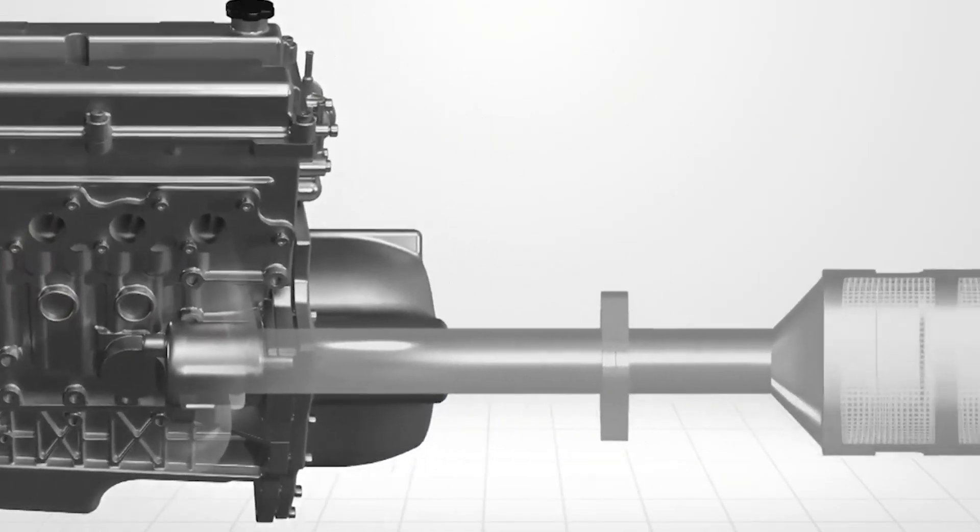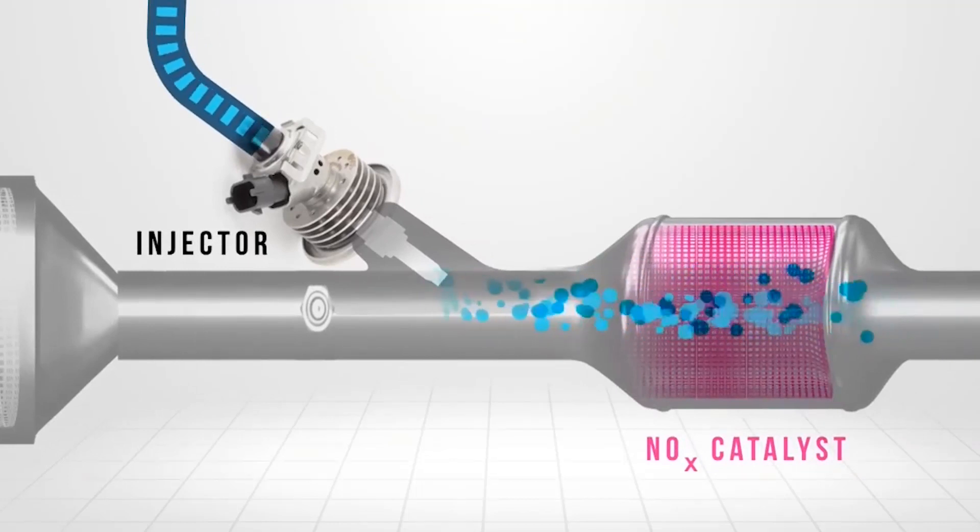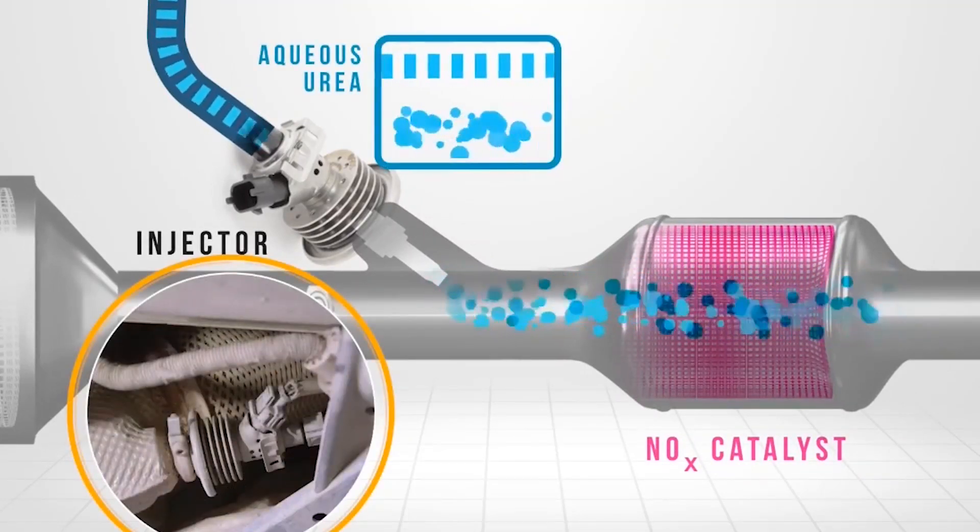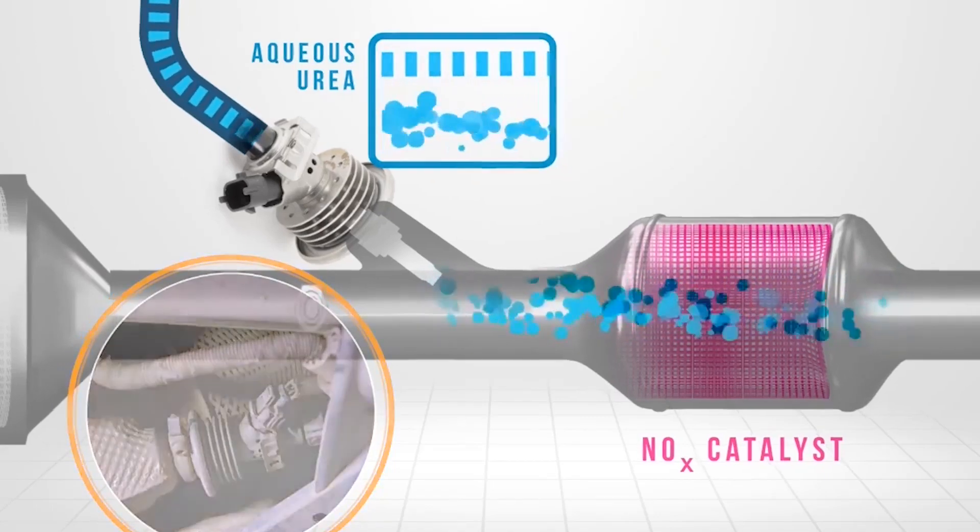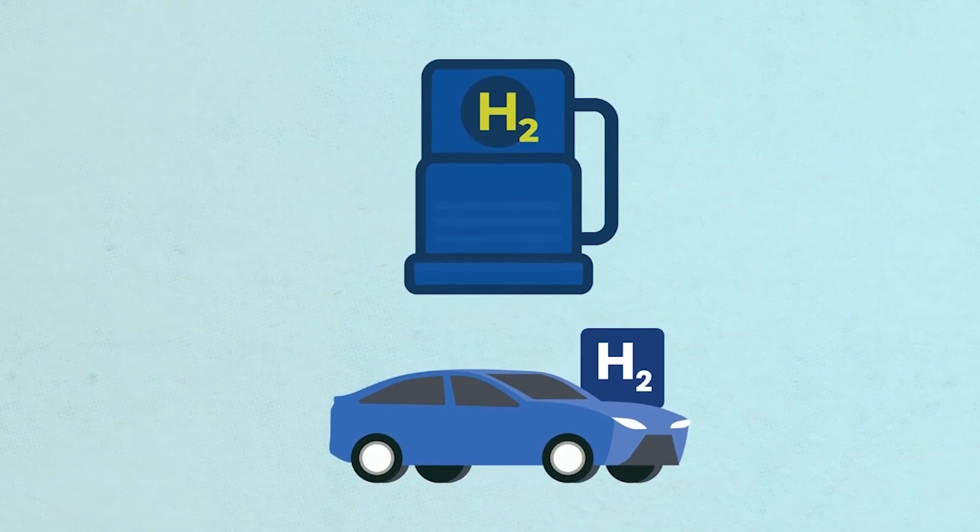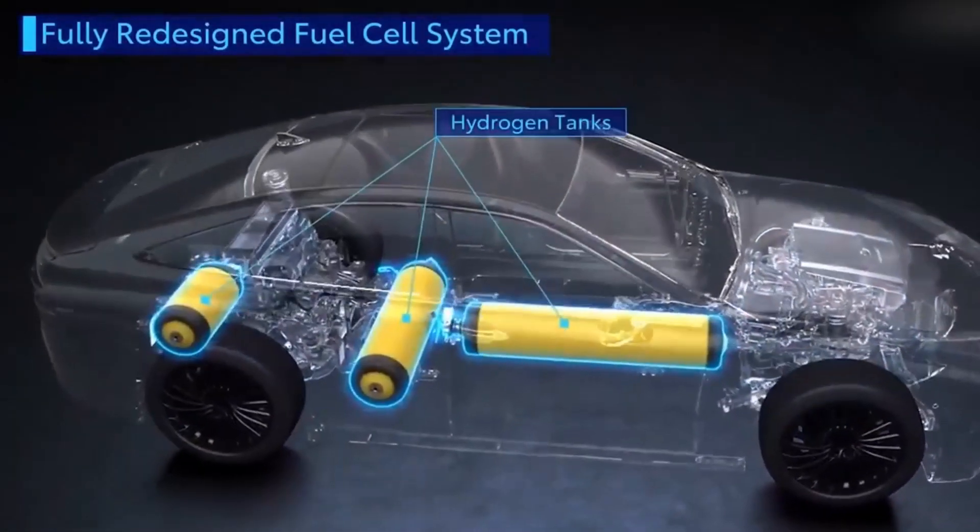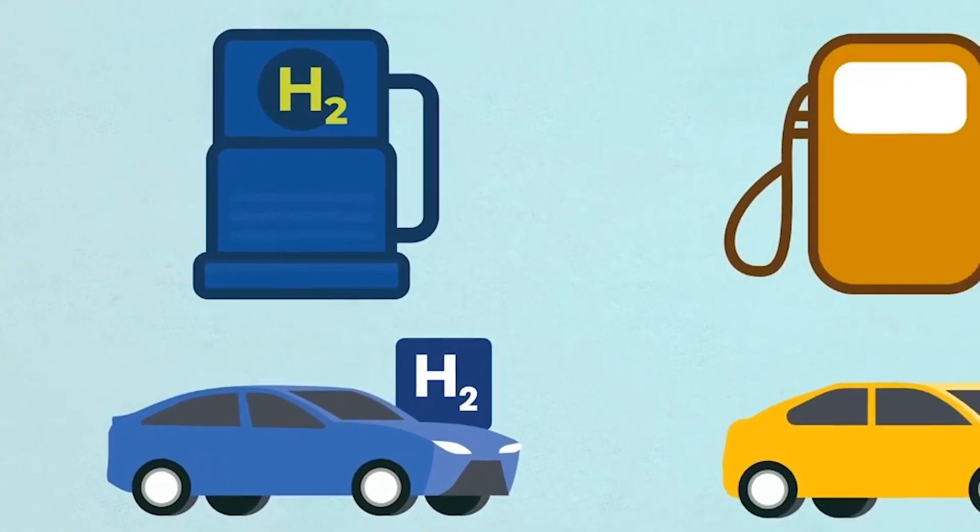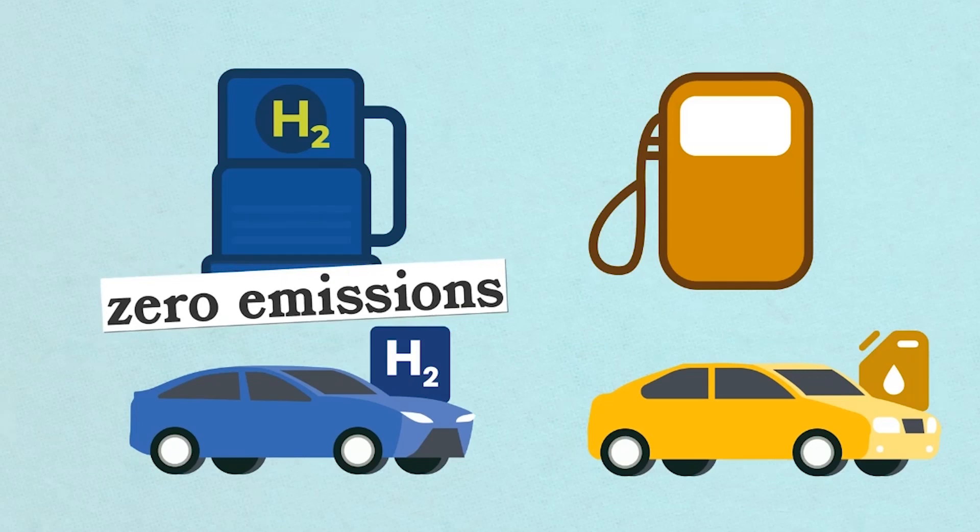Lean NOx absorber catalysts, commonly used in diesel engines, present certain challenges such as high cost, sensitivity to operating conditions, and the need for periodic regeneration using a separate fluid. To address these issues, some propose operating engines on hydrogen, a fuel that does not produce hydrocarbons during combustion. Additionally, opposed-piston engines offer the advantage of a cooler combustion chamber, resulting in significantly lower NOx emissions.